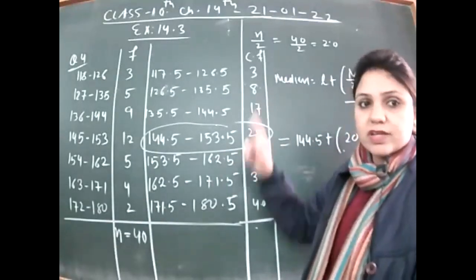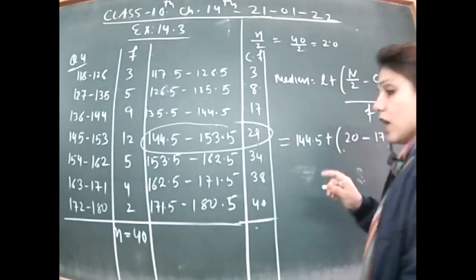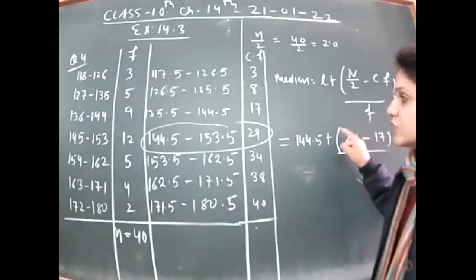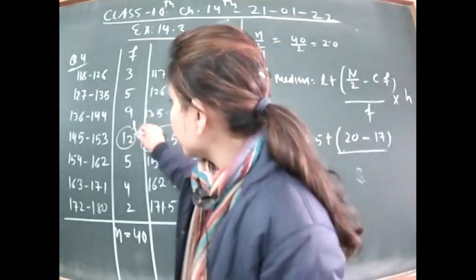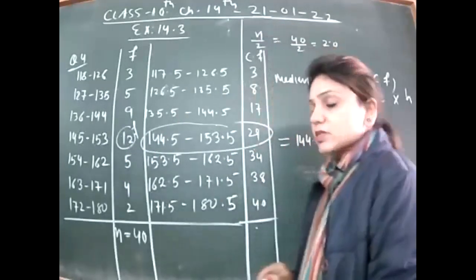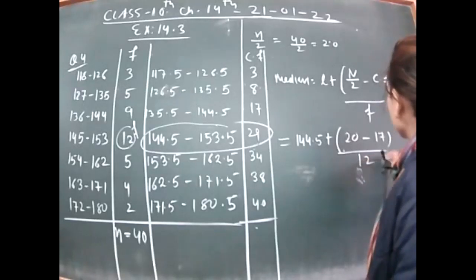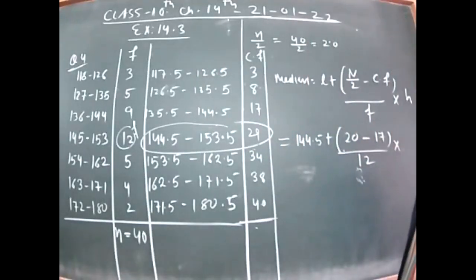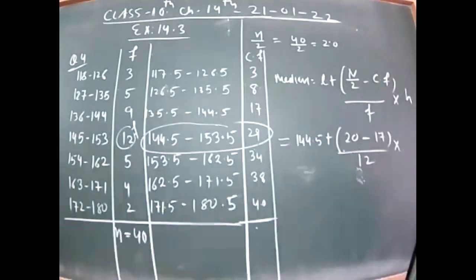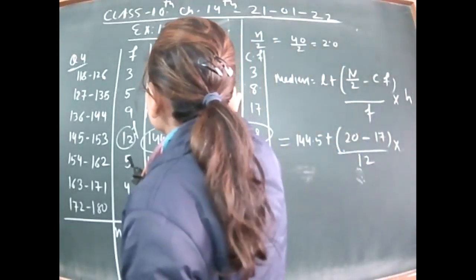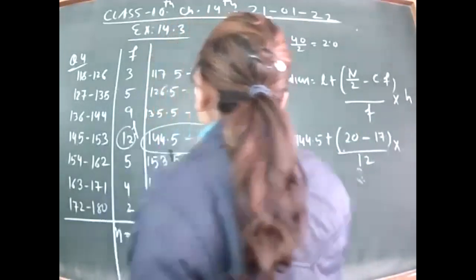CF is the cumulative frequency just preceding the median class. The cumulative frequency just before 29 is 17, so CF = 17. F is the frequency of the median class itself, which is 12. H is the class width — upper limit minus lower limit. The class width comes out to be 9.